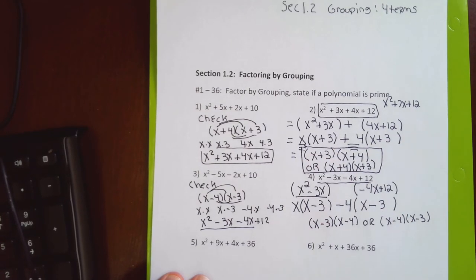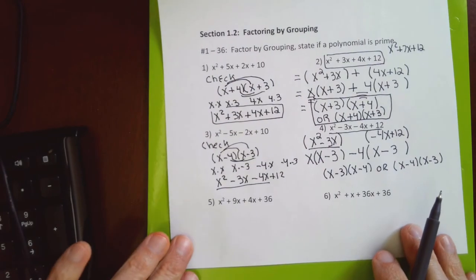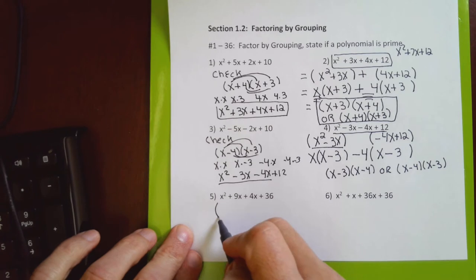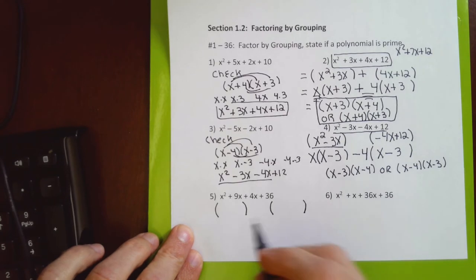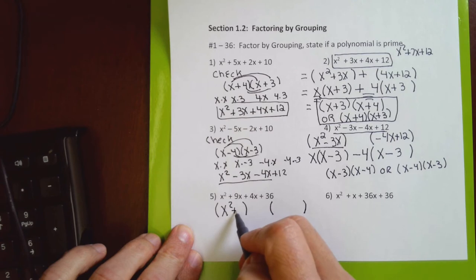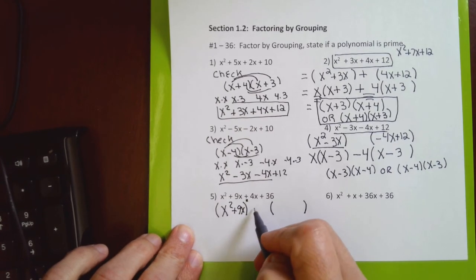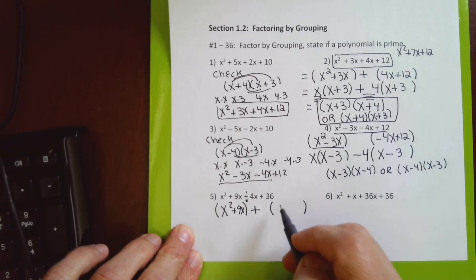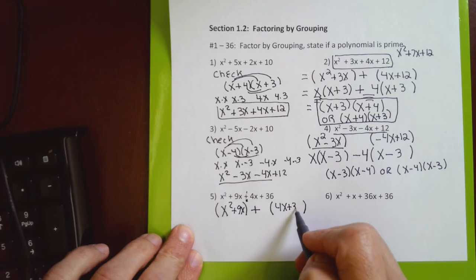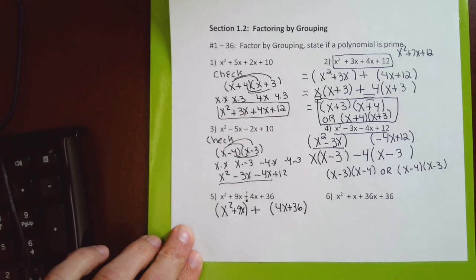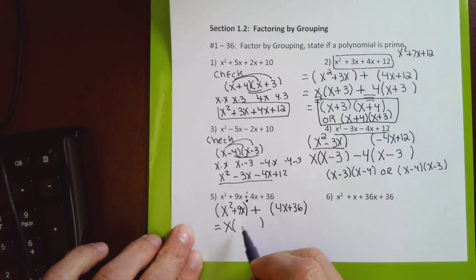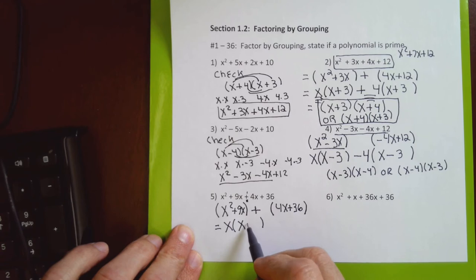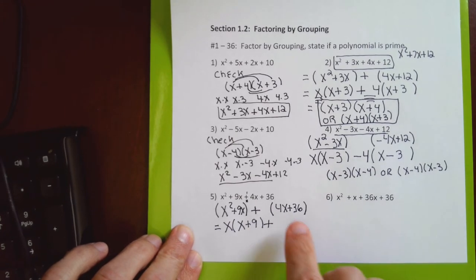For problem 5, I introduce two parentheses. Since the middle sign is plus, it goes in front of the parenthesis. I put x² + 9x in the first parenthesis and 4x + 36 in the second. Both terms in the first parenthesis have an x, so I factor out x to the first, leaving x after the first term and 9 after the plus sign.